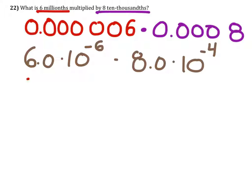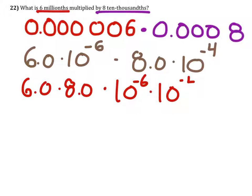So rearranging this, we've got six point zero times eight point zero, times ten to the power of negative six, times ten to the power of negative four.